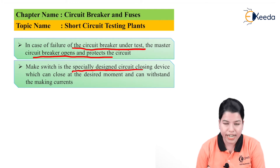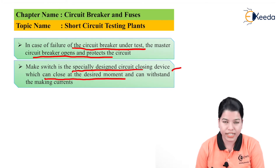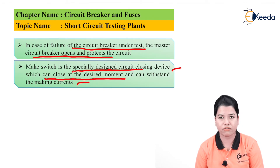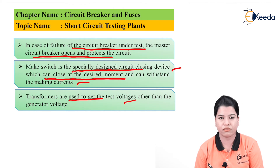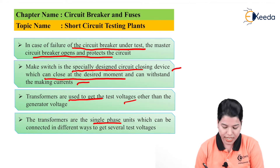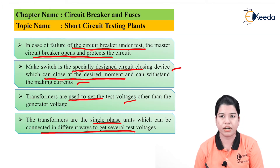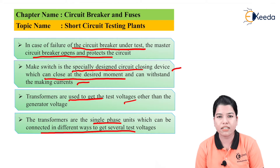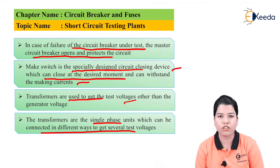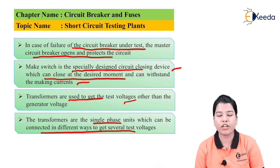The make switch is a specially designed closing device that can close at the desired moment and can withstand making currents. Transformers are used to get the test voltage other than the generated voltage; they are single-phase units that can be connected in different ways for several tests. A step-down transformer is used if lower voltage is needed, and a step-up transformer if higher voltage is needed, adjusted according to the requirement of the circuit breaker under test.